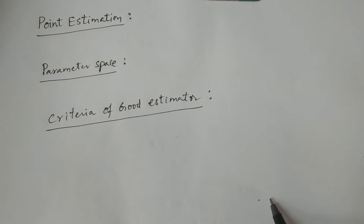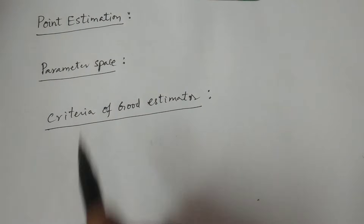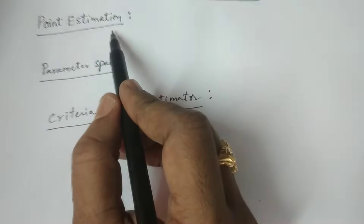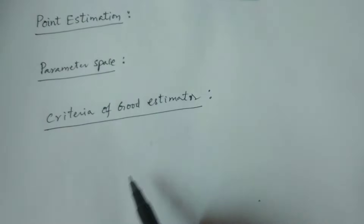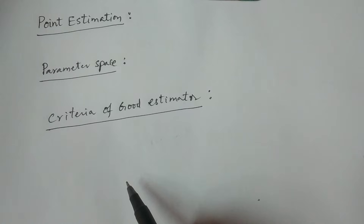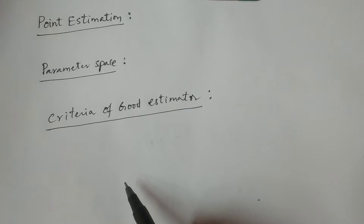Estimation is of two types, which can be classified into point estimation and interval estimation. My topic is point estimation. Point estimation is the finding of a particular value depending on the sample observations to estimate the population parameters. Finding a single value — point estimation is nothing but estimation of the population parameter with a single statistic.